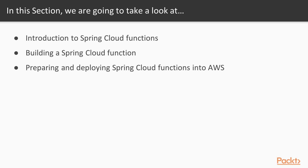Then we will move on to building your very first Spring Cloud Function from the ground up, introducing all of the necessary dependencies required in Maven. We will then demonstrate what that looks like running on your local machine. And finally, in the last section, we will prepare the application for deployment into AWS and also test that within AWS.